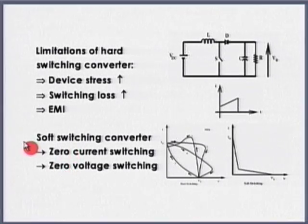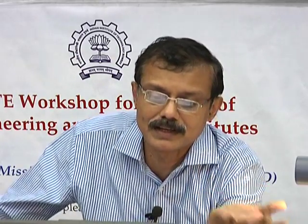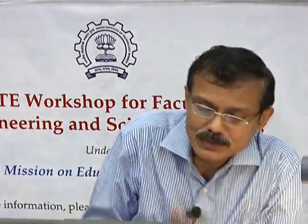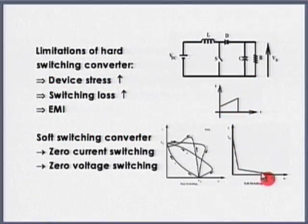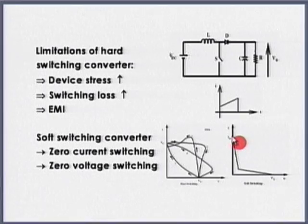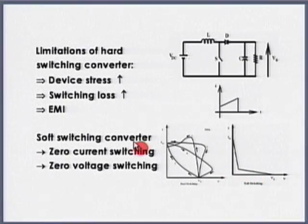Instead, can I use what is known as soft switching? Soft switching implies that I will ensure the voltage across the device is zero or very low, only then will I apply a gate drive to turn it on, or the current flowing through the device will gradually start from zero. See the locus now - voltage has fallen to a very low value and current is increasing from there. Losses are reduced significantly, device stress comes down, and EMI also comes down.